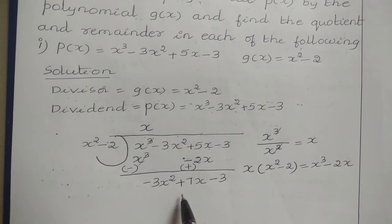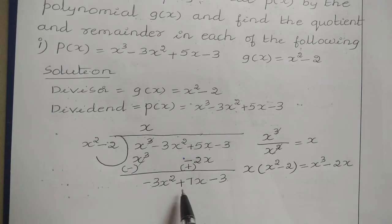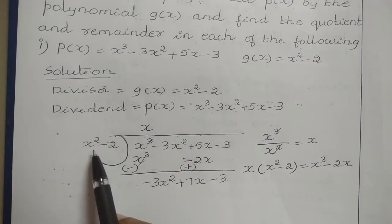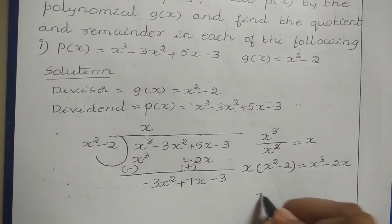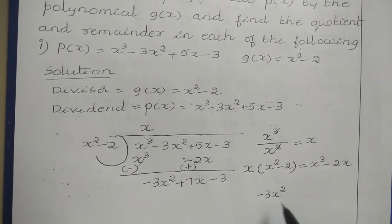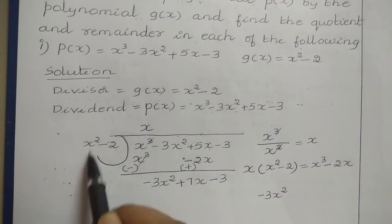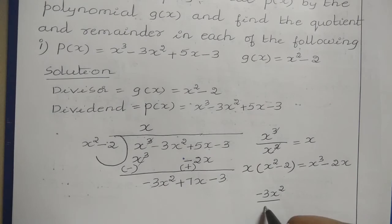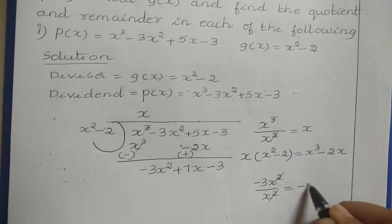For the next step, consider this new dividend. Again, divide the highest degree term of the new dividend by the highest degree term of the divisor. The highest degree term of the new dividend is minus 3X squared. Divide that by X squared — the X squared terms cancel, giving minus 3. This minus 3 becomes the second term of the quotient.